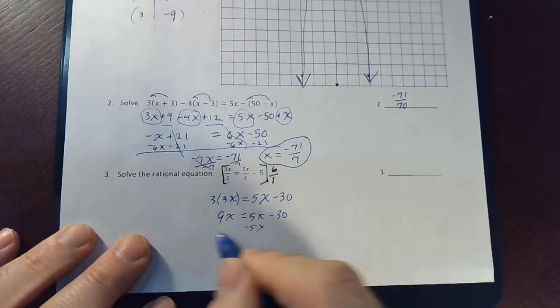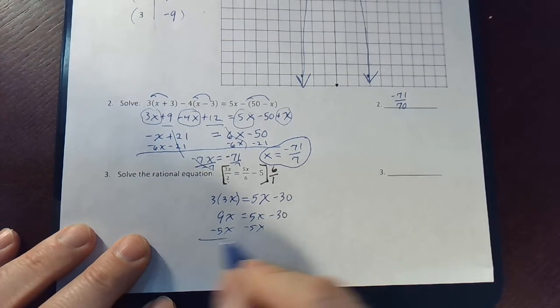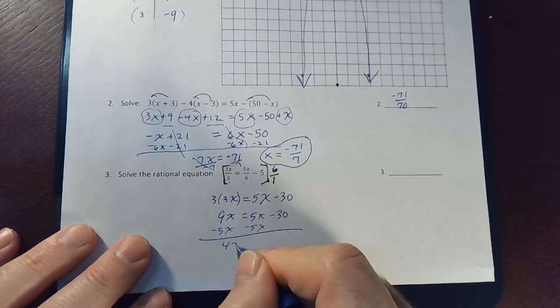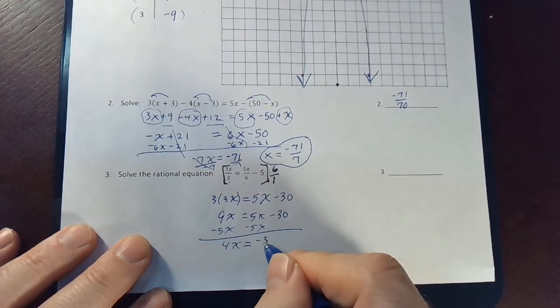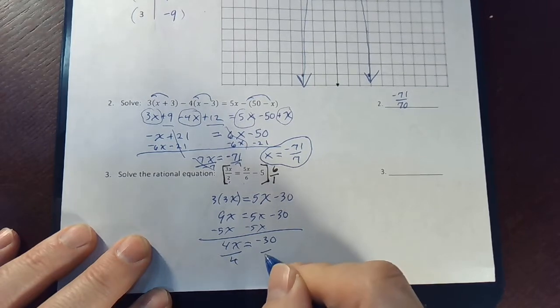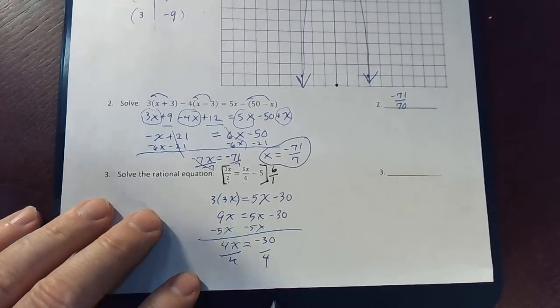So this becomes 9x equals 5x minus 30. Subtracting 5x from both sides gives us 4x equals negative 30. And we divide by 4 to get the final answer.